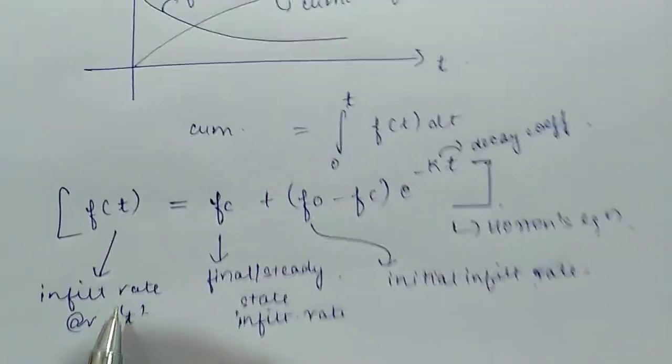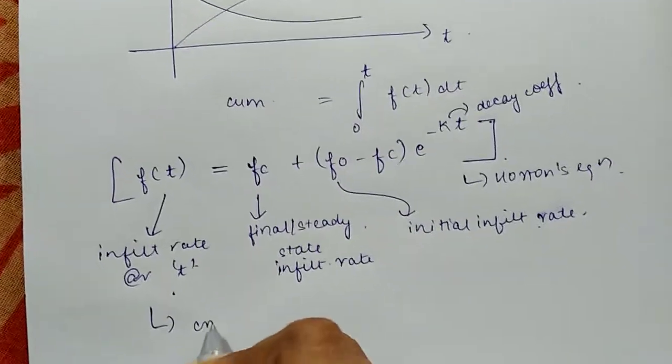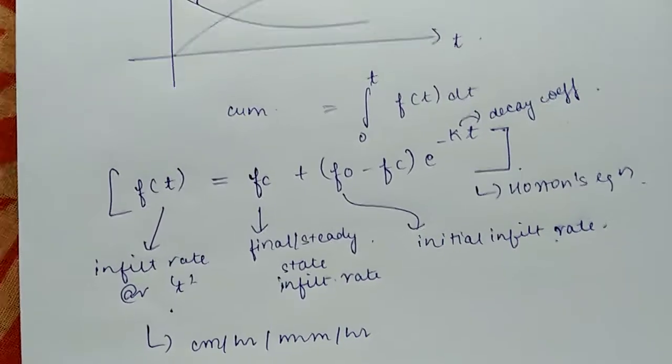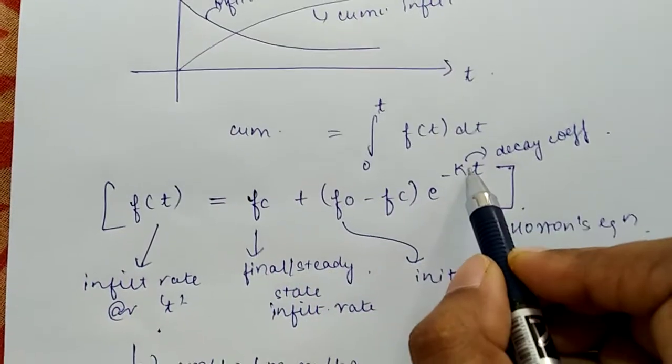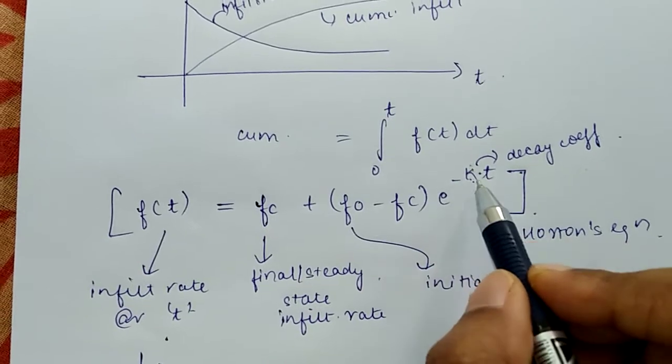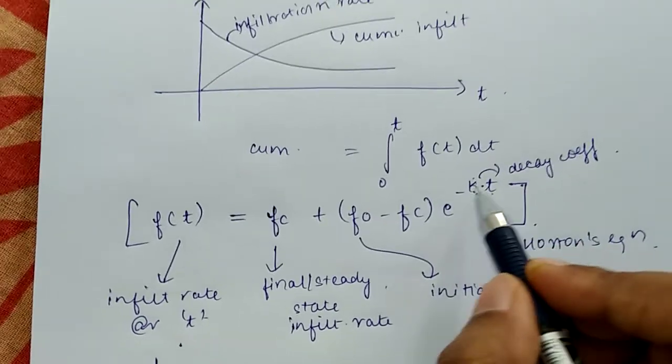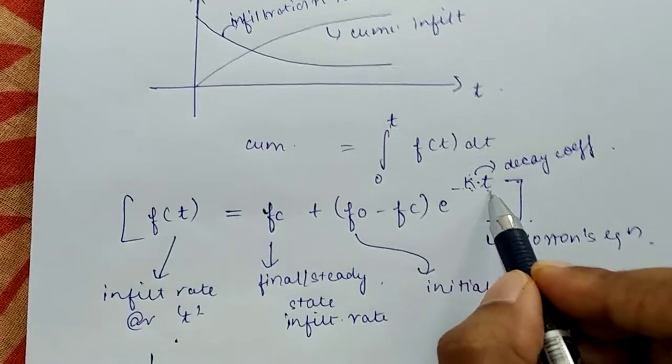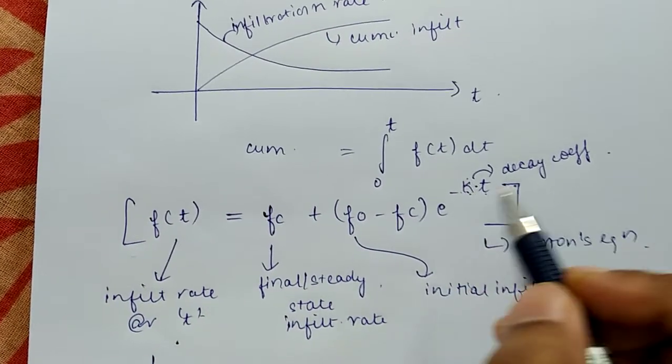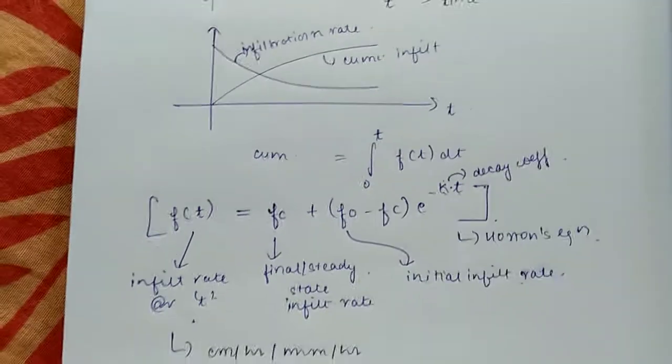This is infiltration rate, so the unit will be depth of infiltration per unit time. It can be expressed as centimeter per hour or millimeters per hour, always depth per unit time. The decay coefficient: kt should be dimensionless. Since t is time, k unit will be time inverse. If t is in hours, k will be 1 per hour. Depending on the question, you should understand what unit to substitute.